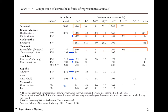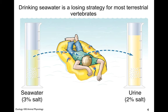Freshwater organisms have a much lower extracellular fluid osmolarity, not that different from terrestrial organisms. For most things that are not marine — like humans — drinking seawater is a losing strategy, because your kidneys can only concentrate urine so much.